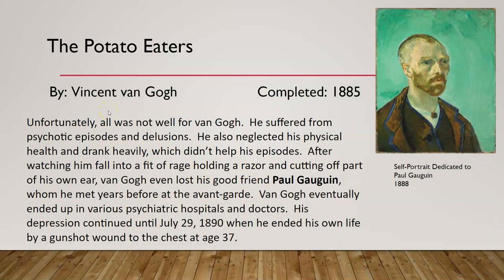Let's look at the last part of Vincent van Gogh's life. Unfortunately, all was not well. During all this time he suffered from psychotic episodes and delusions, also neglecting his physical health and drinking heavily, which didn't help his episodes at all. After watching him fall into a fit of rage, holding a razor and cutting off part of his own ear, Van Gogh even lost his good friend Paul Gauguin. Van Gogh eventually ended up in various psychiatric hospitals and seeing lots of different doctors. His depression continued until July 29, 1890, when he ended his own life by a gunshot wound to the chest at age 37.